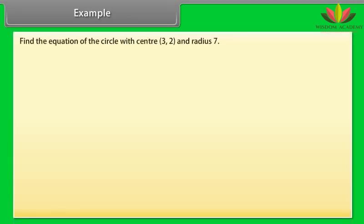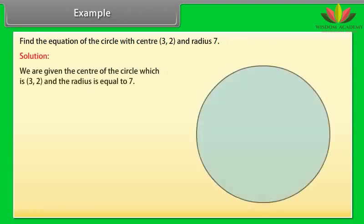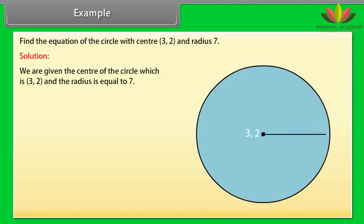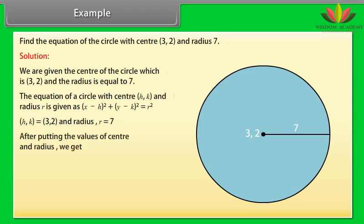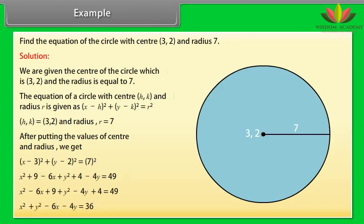Example: Find the equation of the circle with center (3, 2) and radius 7. Solution: We are given the center (3, 2) and radius r = 7. The equation of a circle with center (h, k) and radius r is (x - h)² + (y - k)² = r². Substituting h = 3, k = 2, and r = 7, we get (x - 3)² + (y - 2)² = 49. Expanding, we get x² + y² - 6x - 4y = 36.